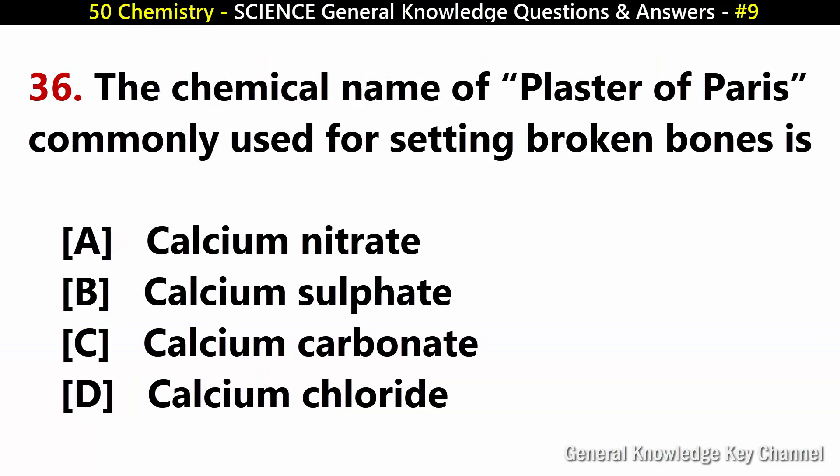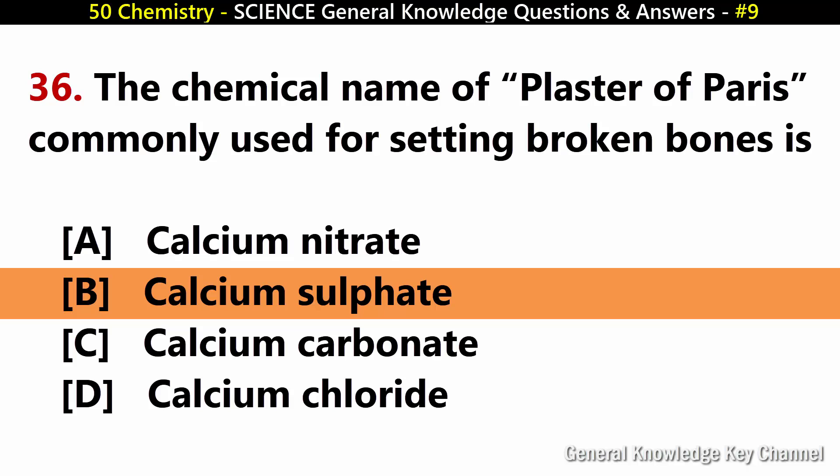The chemical name of plaster of Paris, commonly used for setting broken bones, is? Answer B: Calcium sulfate.